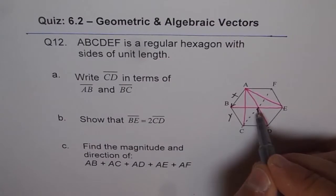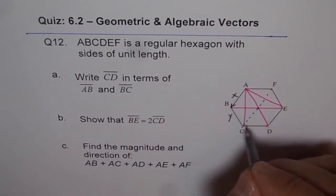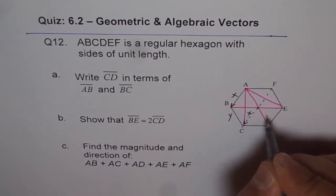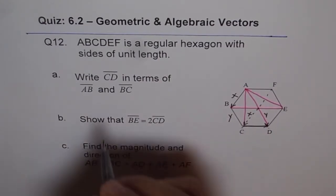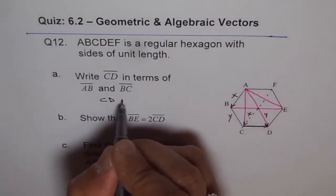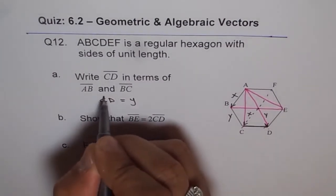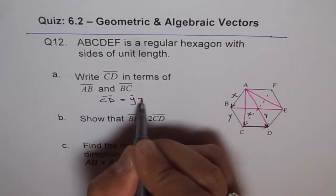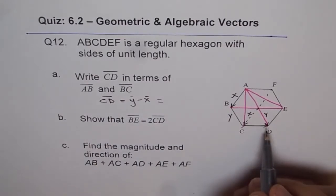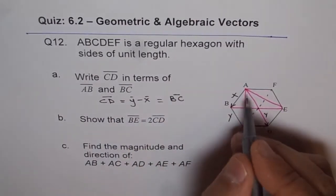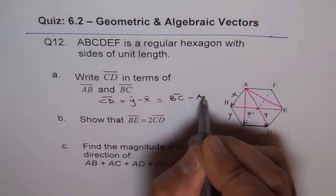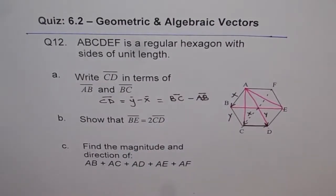Now it's a regular hexagon, and therefore from here if we see, this side is X. So this side will be X for us and this side will be Y for us. Therefore we can say CD is equal to Y minus X. So we can write CD equals Y minus X. Basically Y is BC, so you can write BC minus AB.